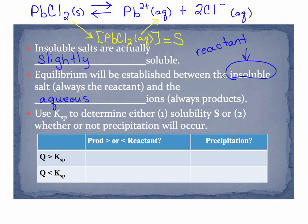So let's take a look at this. If Q is greater than K—remember if Q is greater than K, that means that our products are greater than our reactants—and if we have too much product, we're going to shift to the reactant side, and the reactant side is where we see our solid forming. That's our precipitate. So the answer will be yes.